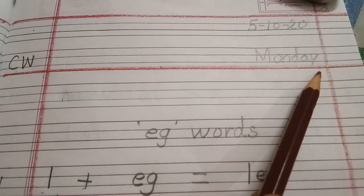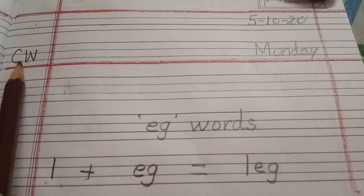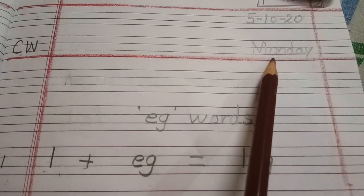First we will draw margin line, then we will write here CW, date and day. Today is Monday.